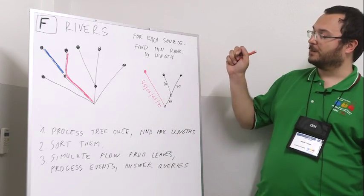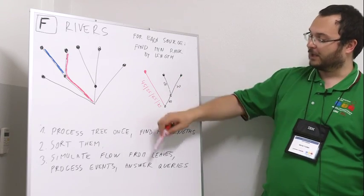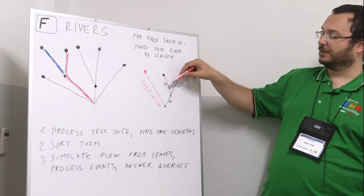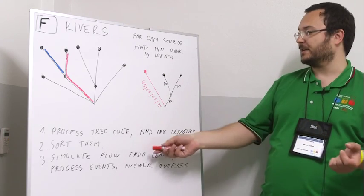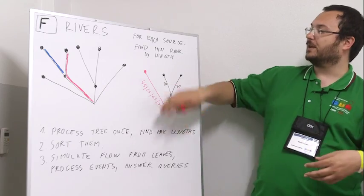And so in this way the rest of the logic can be worked out. We are processing events, we are adding new events as we go, and we have two types of events: one of them is that the water reached confluence, the other is that we got a query with the length we want to answer, and we are computing the answers as we go.